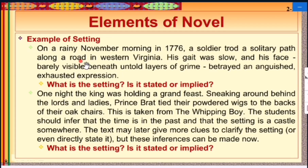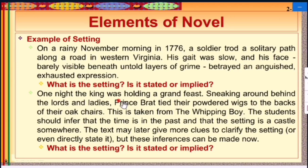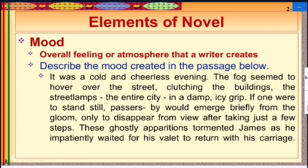In the first example, the setting is stated — 'a rainy November morning in 1776' gives the exact time and place. In the second, the setting is implied because clues like 'one night the king was holding a grand feast' suggest a time period without specifying it exactly. Most stories are written in implied settings, such as 'once upon a time.'